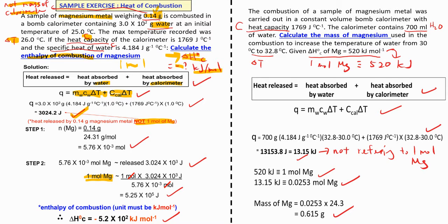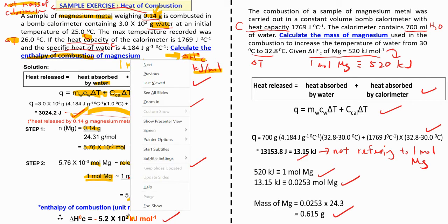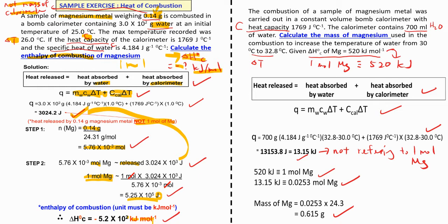What you calculate here in joules is not referring to the heat released by one mole of magnesium. If we want the enthalpy of combustion, it must refer to one mole only. So we use the mass of magnesium to find the number of moles, and then determine how much heat is released per mole. Remember your final unit must be changed to kilojoules per mole.